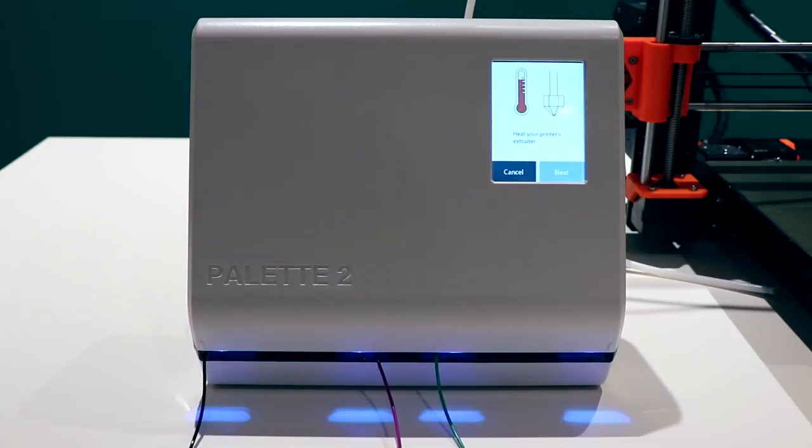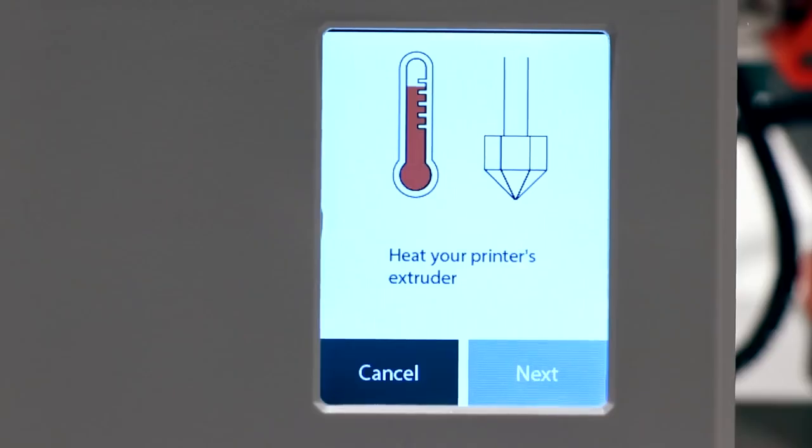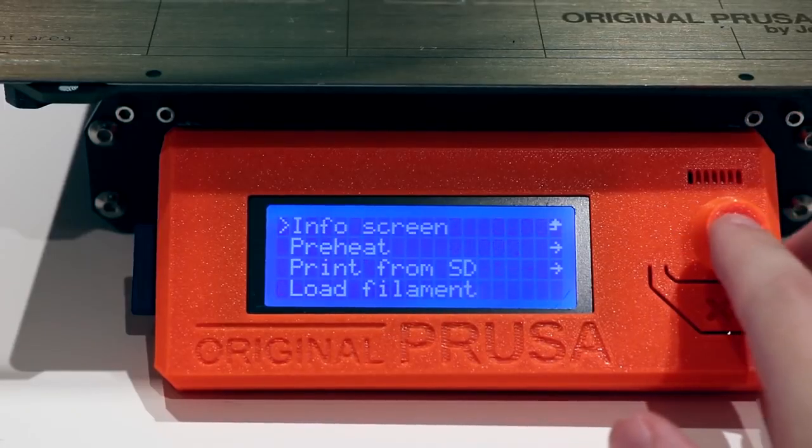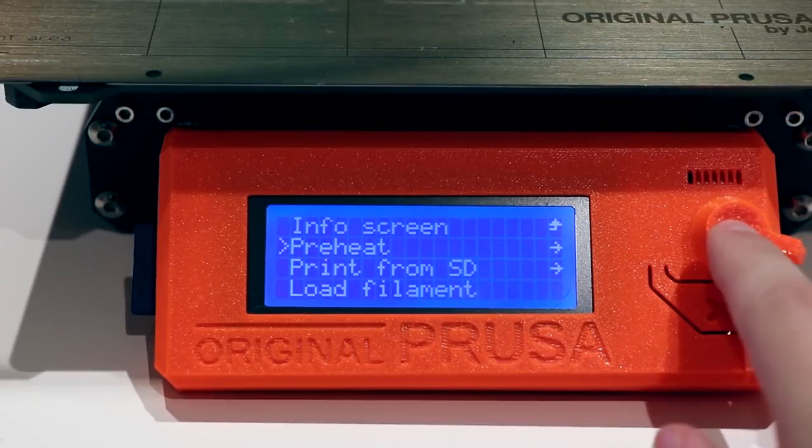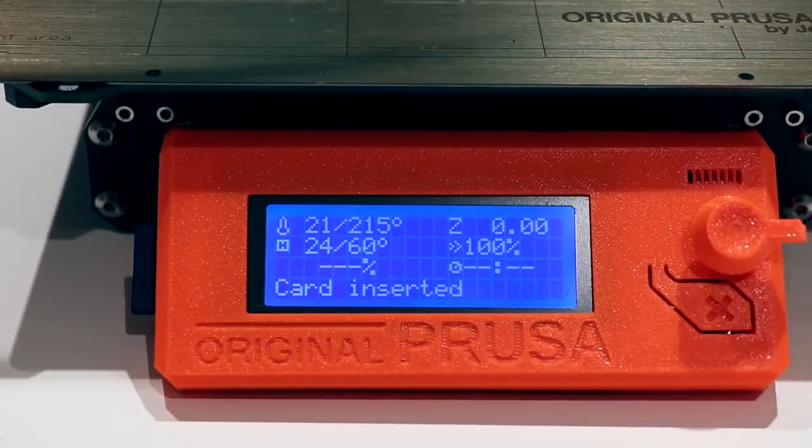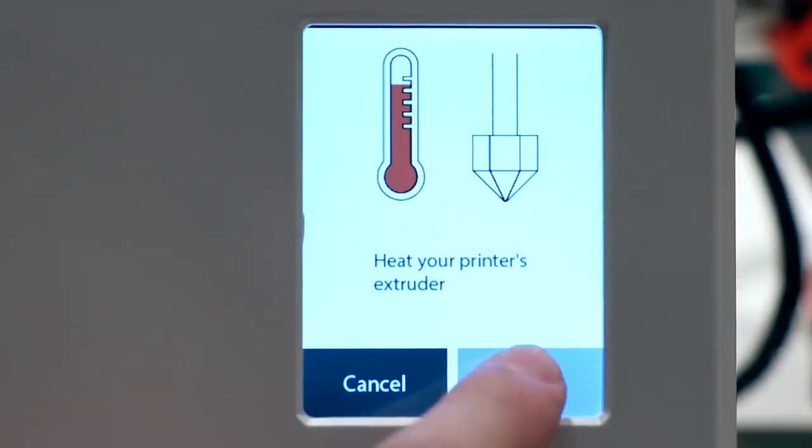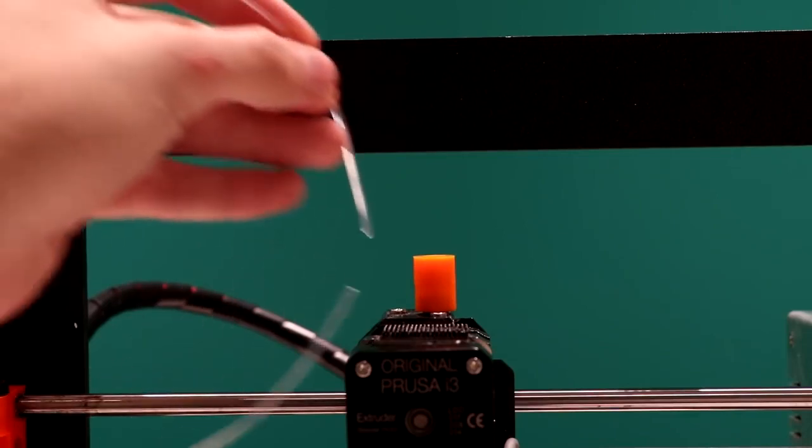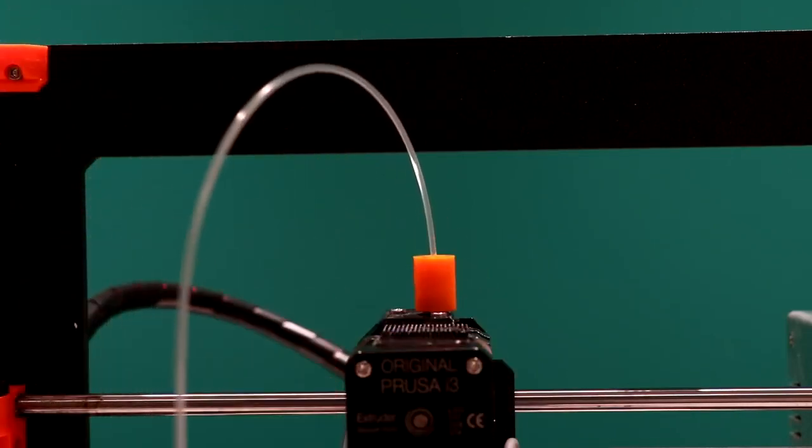Now that we have loaded our filament, Palette 2 will prompt us to preheat the printer's extruder while Palette 2 starts making filament. Next, we will be prompted to load a clear or light colored filament into our printer's extruder. We're trying to use the light filament to purge the nozzle. Purging the nozzle with this light colored filament will help us see when to stop loading filament from Palette into the printer. This step is only needed when using Palette with a new printer for the first time.